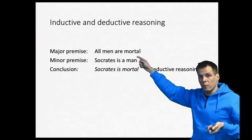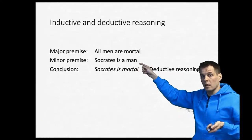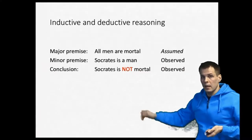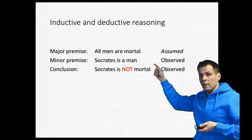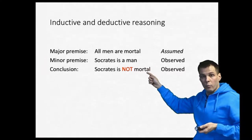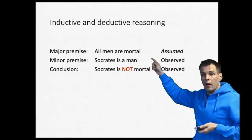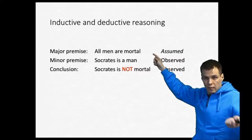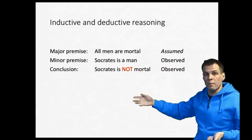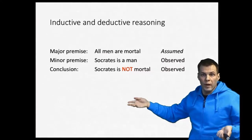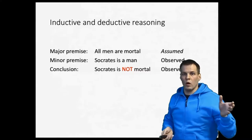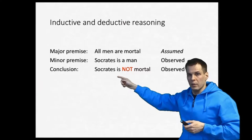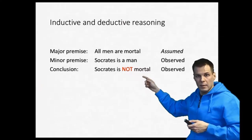If the conclusion is not true, then at least one of the premises must be false. For example, if we observe that Socrates is a man but is not mortal, then our assumed rule that all men are mortal is incorrect. We can clearly say: if Socrates is a man and Socrates is not mortal, then not all men are mortal. So we can refute claims using deductive reasoning by observing something that differs from the expected conclusion.